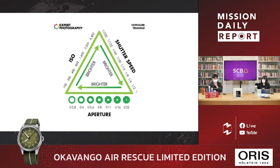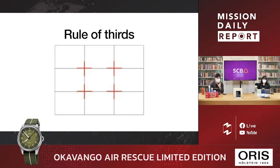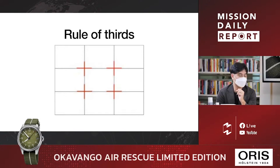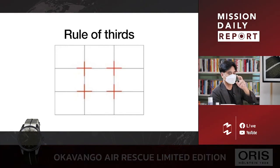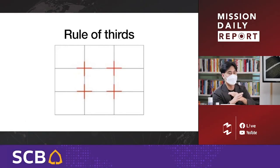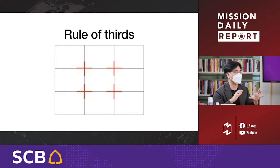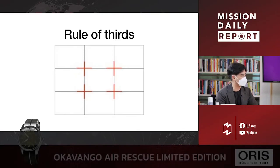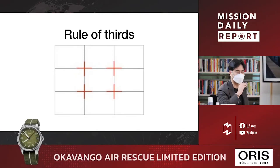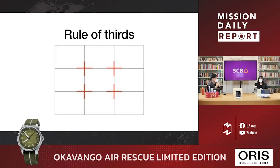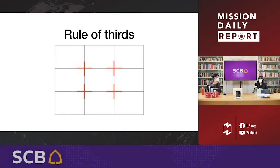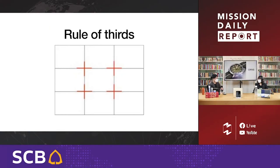The second technique everyone should use is the rule of thirds. When you enable the grid on your camera or phone settings, there will be lines dividing the frame. You place your subject at the intersection points of those lines. This creates balance and better composition, making the image more beautiful. You can turn on the grid in settings and practice framing your shots this way.